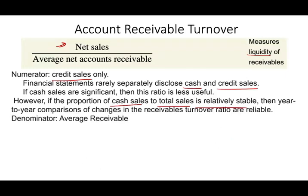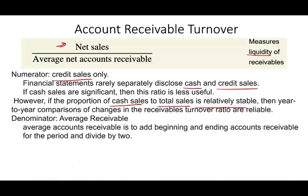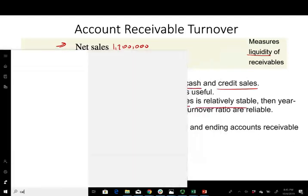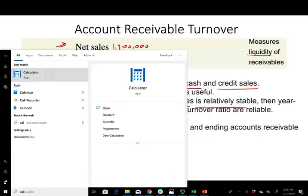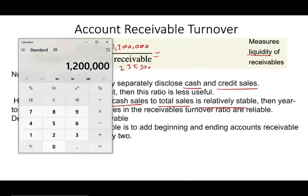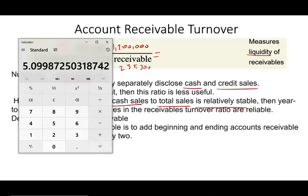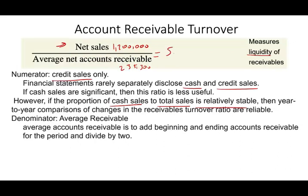The denominator is the average — beginning plus ending divided by two. For example, if net sales are $1.2 million and the average net receivable is $235,300, then taking 1.2 million divided by 235,300 gives us 5.1. The account receivable turnover is 5.1 times.